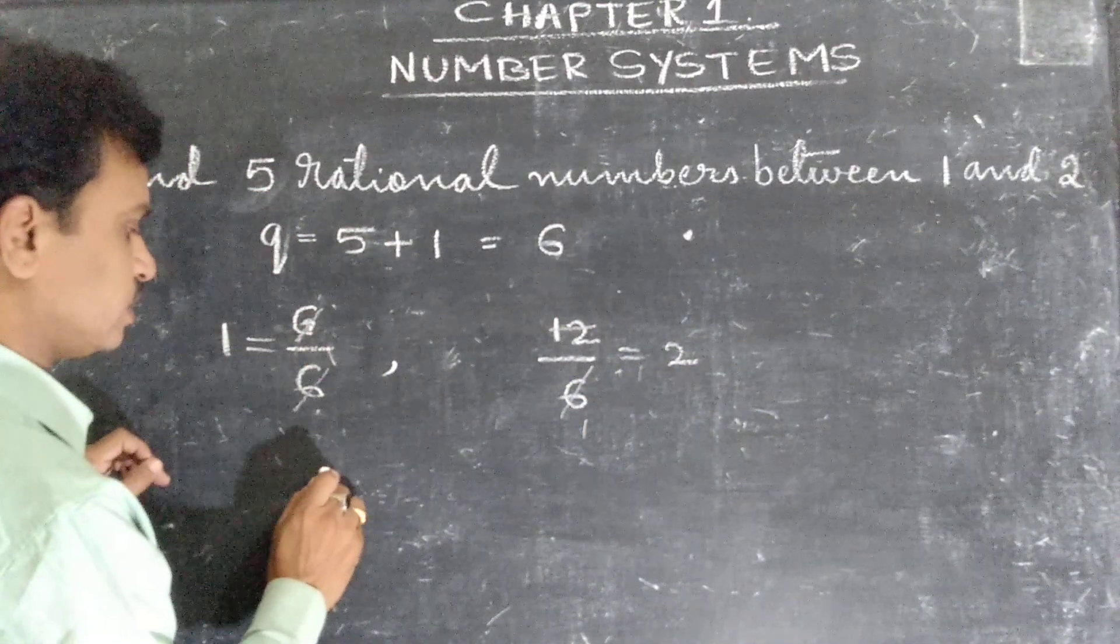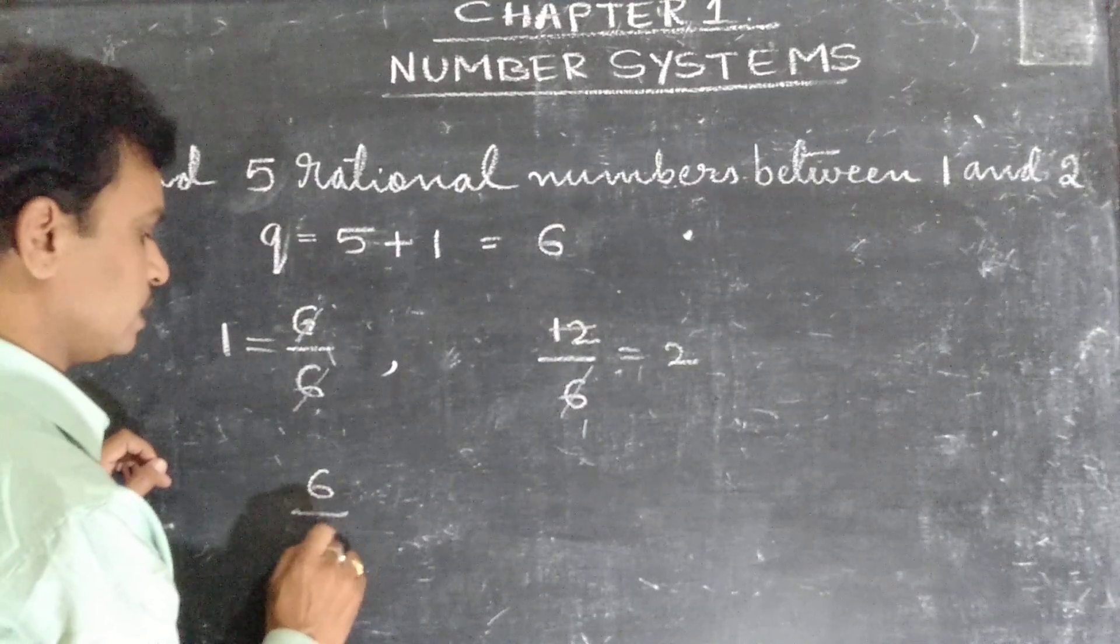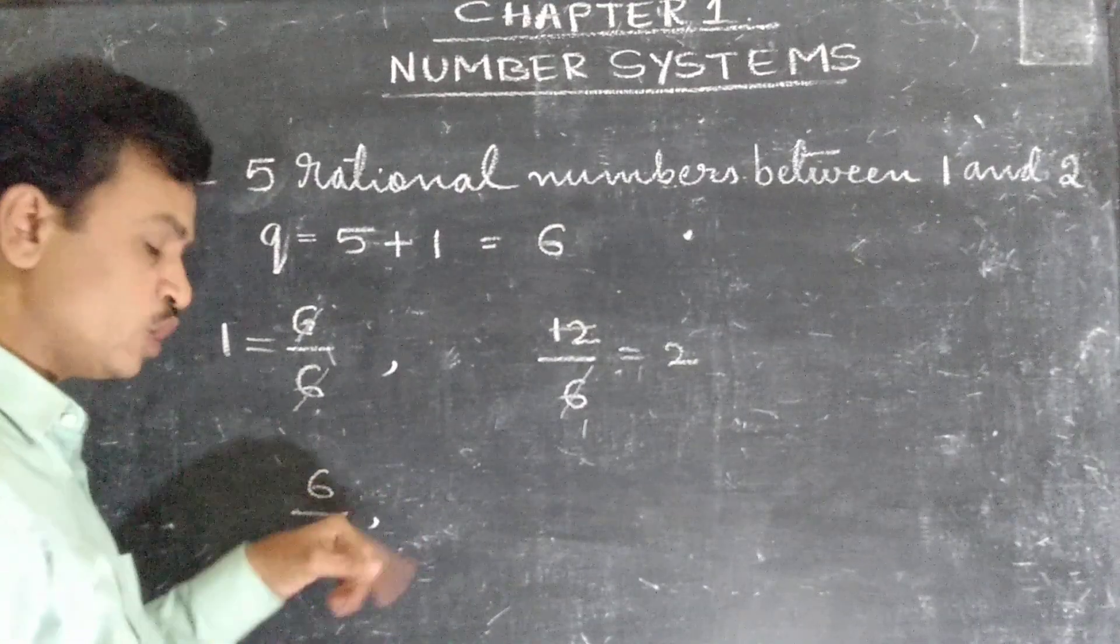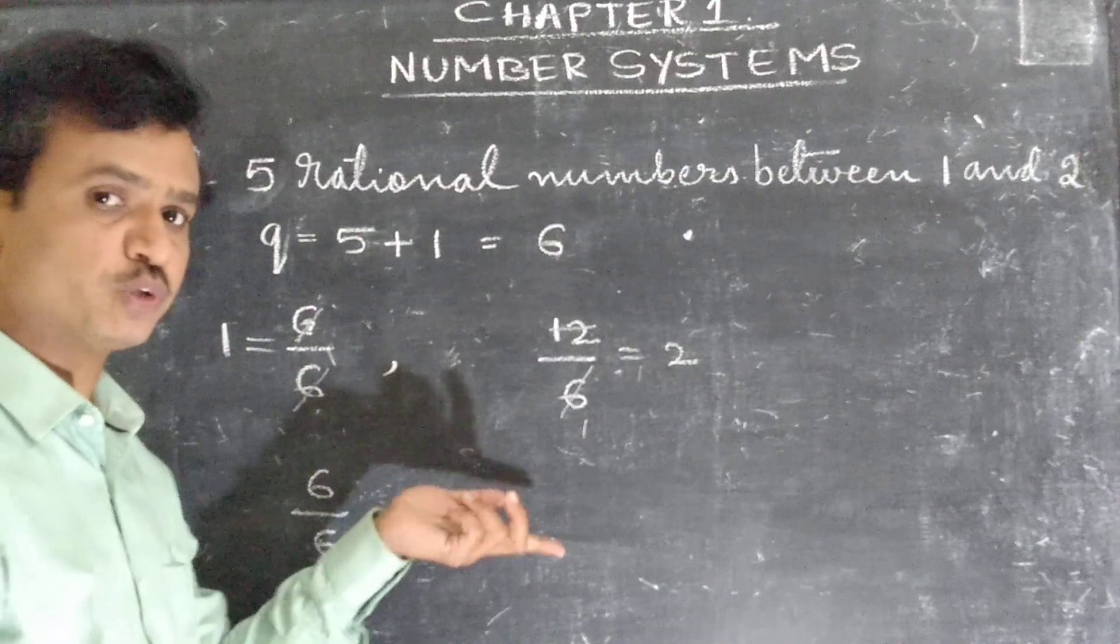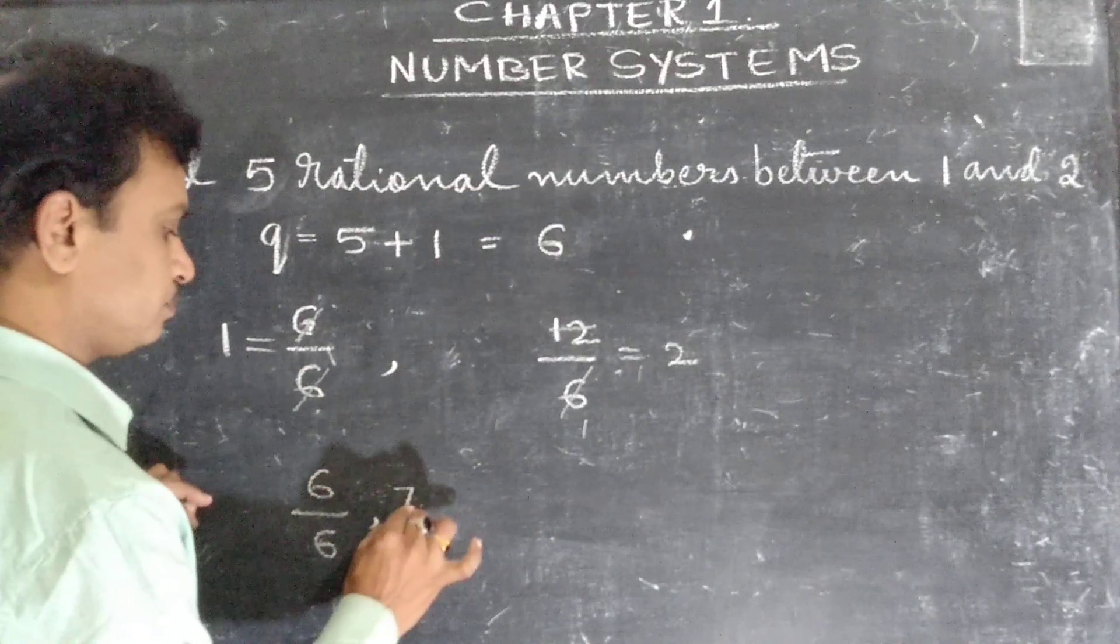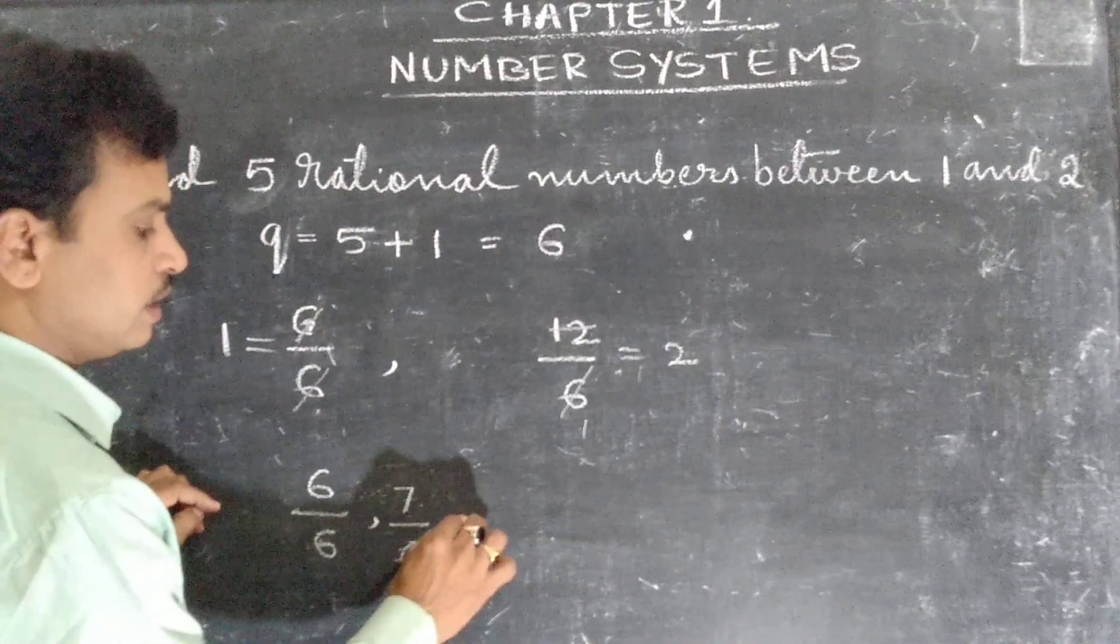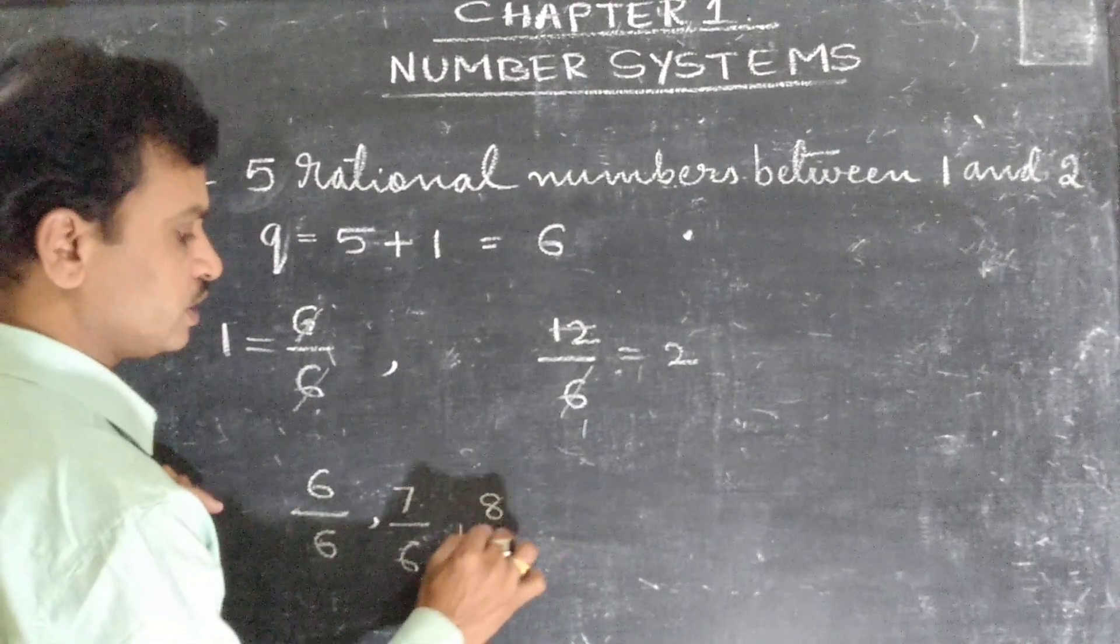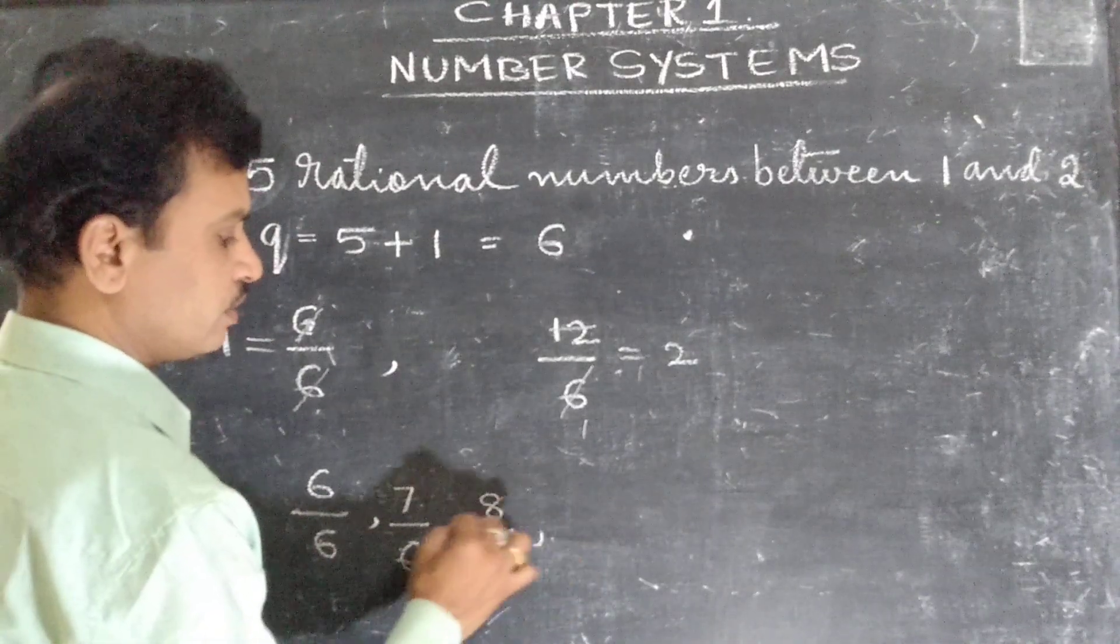Now what is here? 6 by 6. First you should write 6 by 6. In the numerator, after 6 what should we take here? 7. 7 divided by 6. Next after 7, 8.